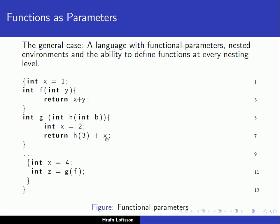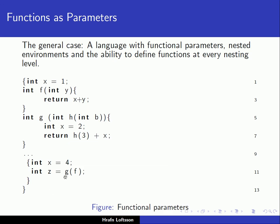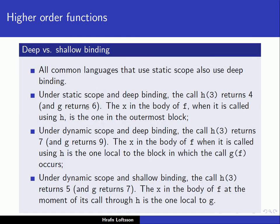Then we add x to it, but x is local to g, so that's 2. So we get 9 — g returns 9. The x in the body of f, at the moment of its call through h, is the one local to the block in which the call of g of f occurs. The last possibility is dynamic scope and shallow binding.